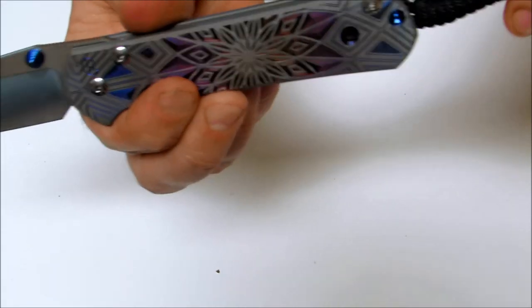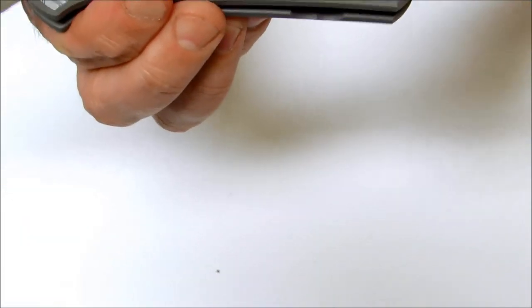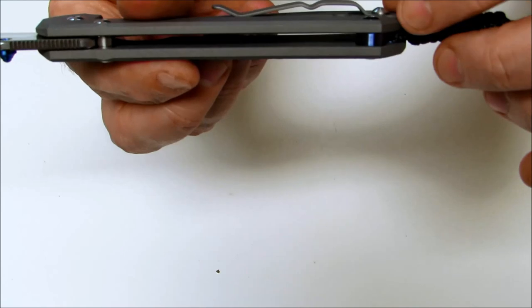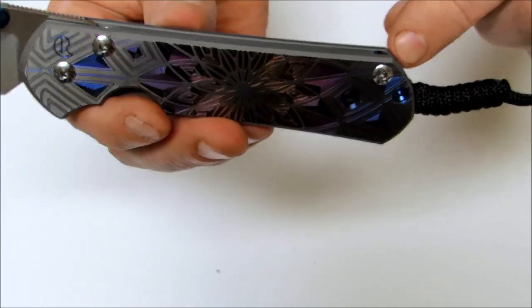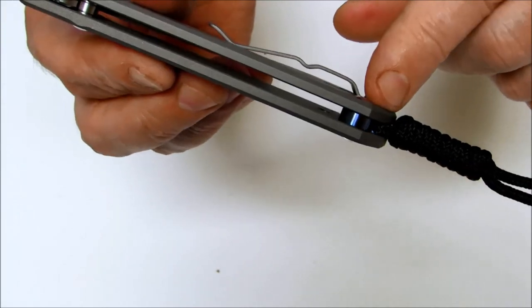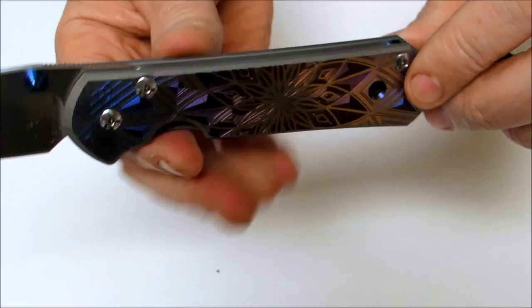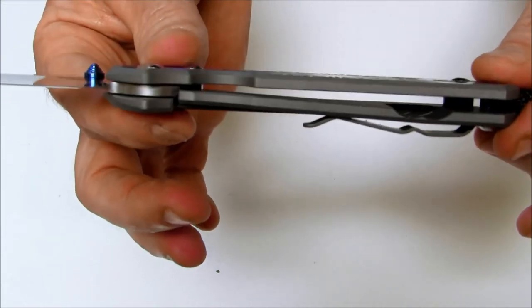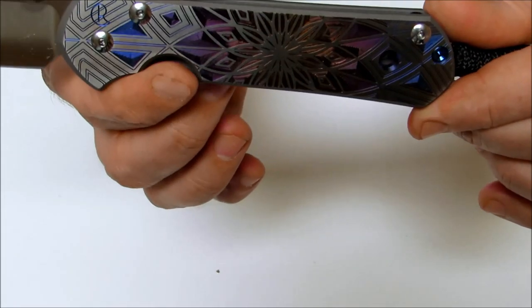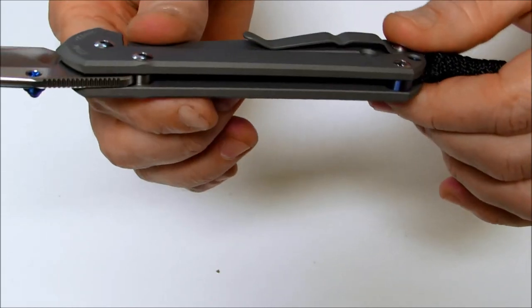You have a lanyard already attached with a nice lanyard bolt that goes all the way through, which is another nice Chris Reeve unique feature. You have an anodized backspacer and open build on the handle so you can easily clean lint or debris out of there either under the sink or with a little air pressure.